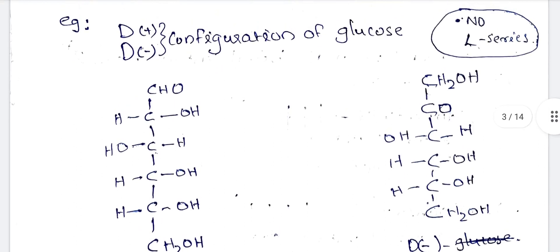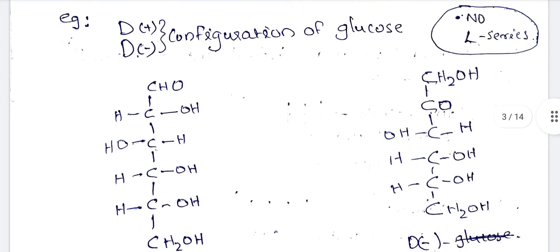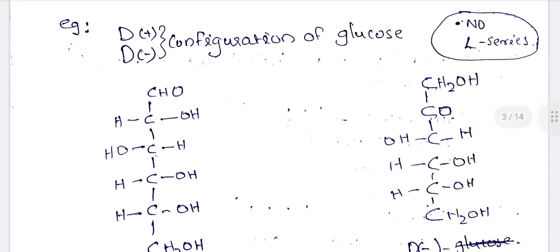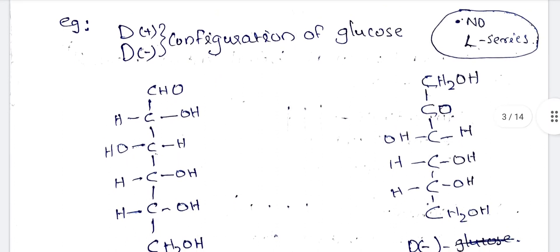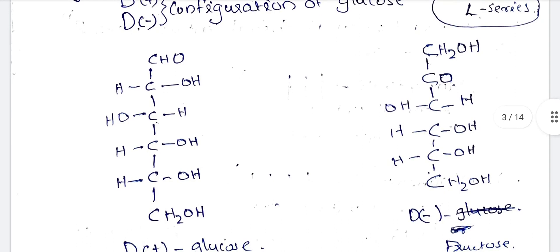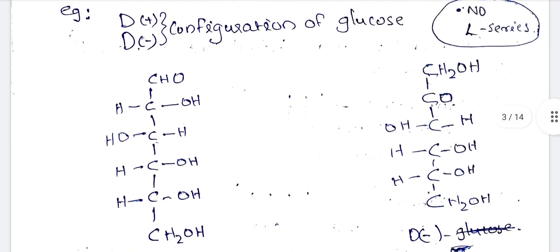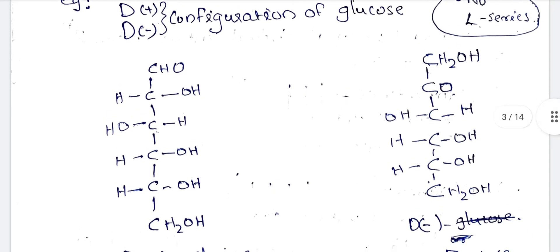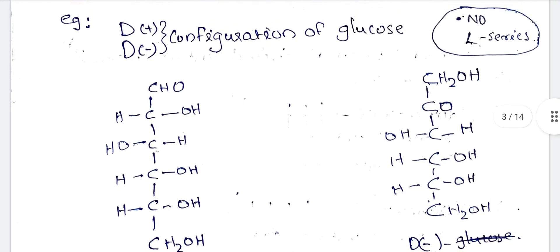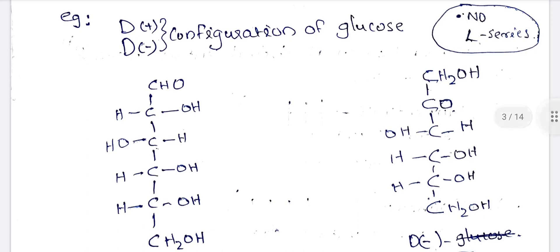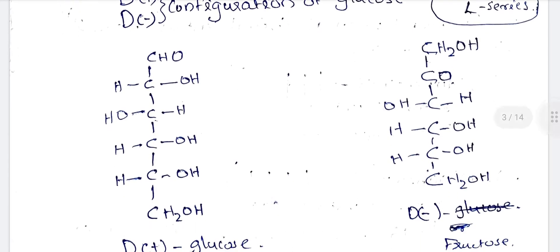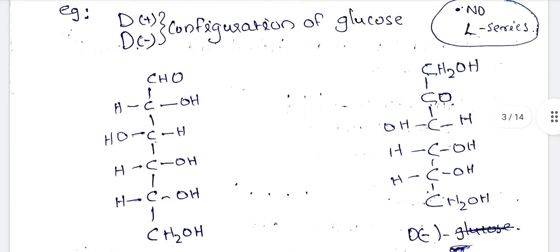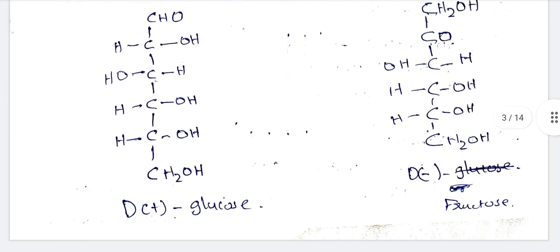The configuration of glucose: the D-series is D-plus and the L-series is D-minus. Regarding fructose, the D-plus configuration is glucose and D-minus is fructose. The D-plus of glucose and D-minus of fructose are distinct configurations.